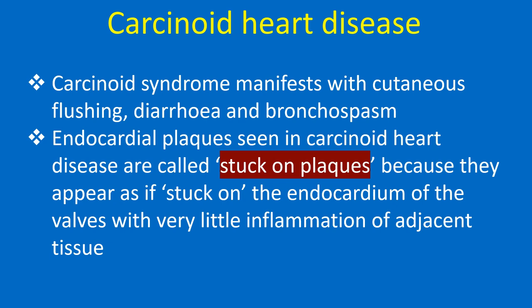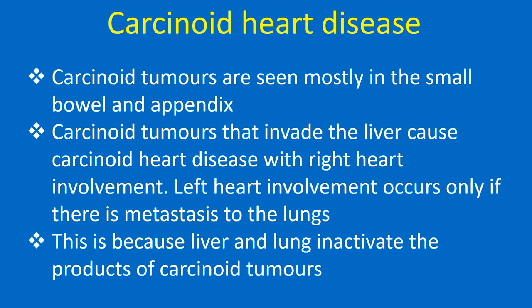Carcinoid heart disease — carcinoid syndrome manifests with cutaneous flushing, diarrhea, and bronchospasm. Endocardial plaques seen in carcinoid heart disease are called 'stuck-on plaques' because they appear as if stuck on the endocardium with very little inflammation of adjacent tissue. Carcinoid tumours are seen mostly in the small bowel and appendix. Those that invade the liver cause carcinoid heart disease with right heart involvement. Left heart involvement occurs only if there is metastasis to the lungs, because the liver and lung inactivate the products of carcinoid tumours.